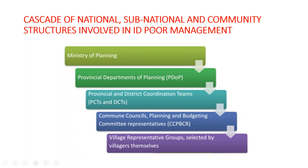This cascade shows the national, sub-national, and community structures involved in identifying the poor. The Ministry of Planning conducts an ID Poor survey every two years to identify poor beneficiaries. At the central level, the Ministry of Planning leads. At the provincial level, the provincial department of planning and district team, as well as commune councils, are involved in identifying who qualifies as poor, down to the village representative level.